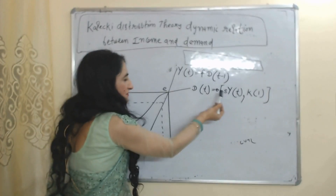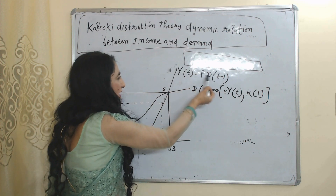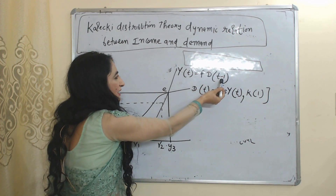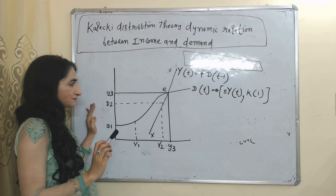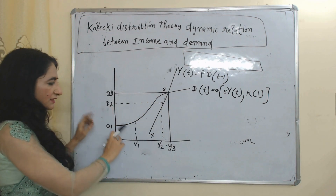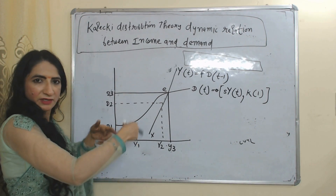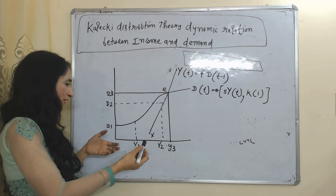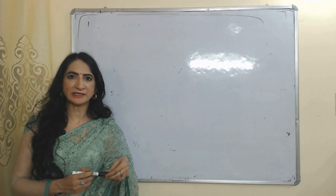Demand is influenced by income and capital. Here D is demand, Y is income, K is capital, and income is a function of past demand. Here Y_t represents current income and D_{t-1} represents past demand. E represents stability in income and demand. At Y3 income and D3 demand, the economy is in equilibrium. Y1, Y2, D1, D2 represent demand at different levels of income.